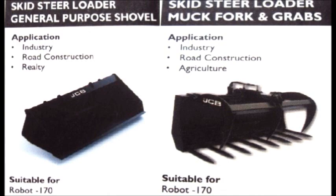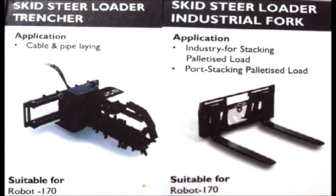The skid steer loader also supports a muck fork and grab attachment. The skid steer loader trencher is used for cable and pipe laying applications and is installed on the skid steer loader — the Robot, which is a product of JCB. The skid steer loader industrial fork is used for industrial applications.